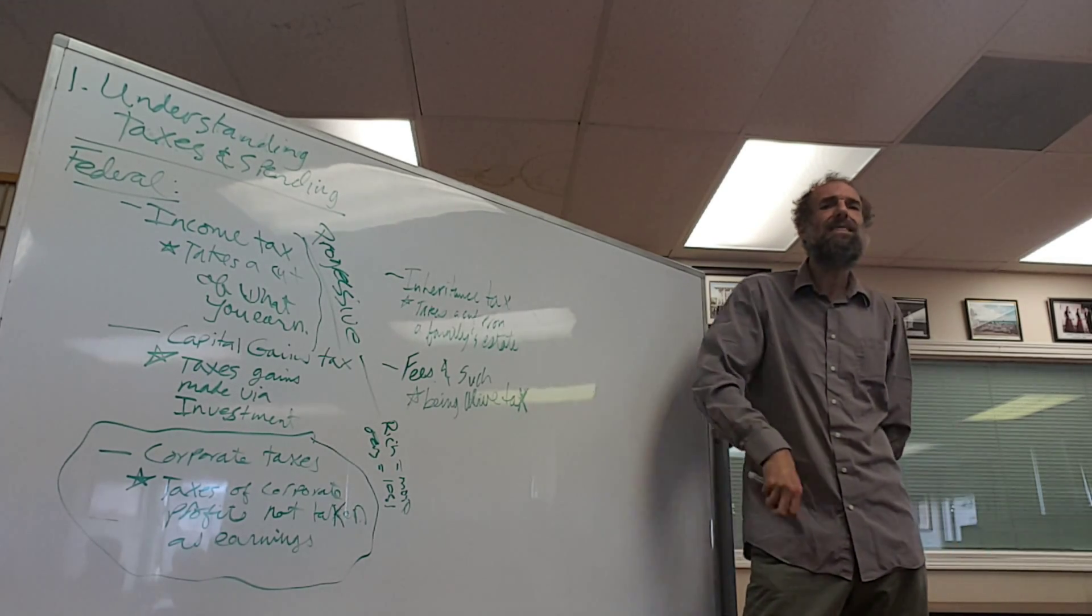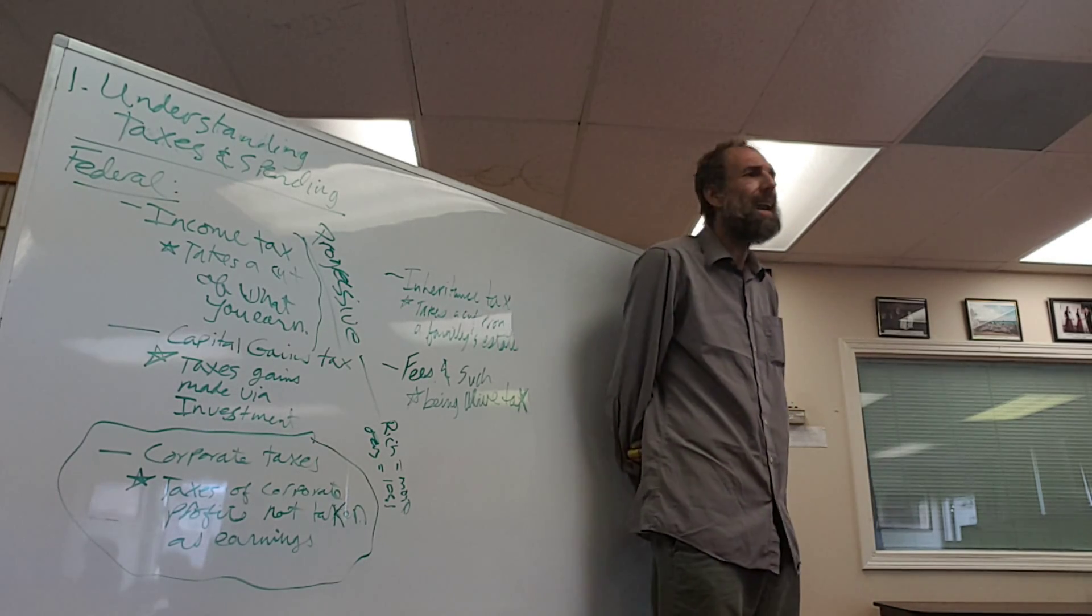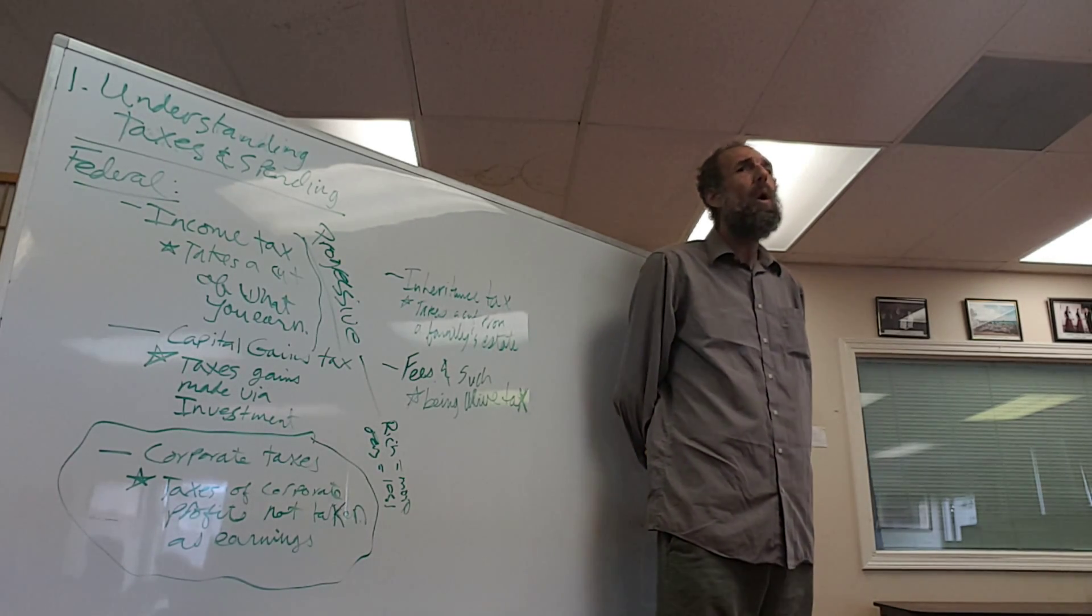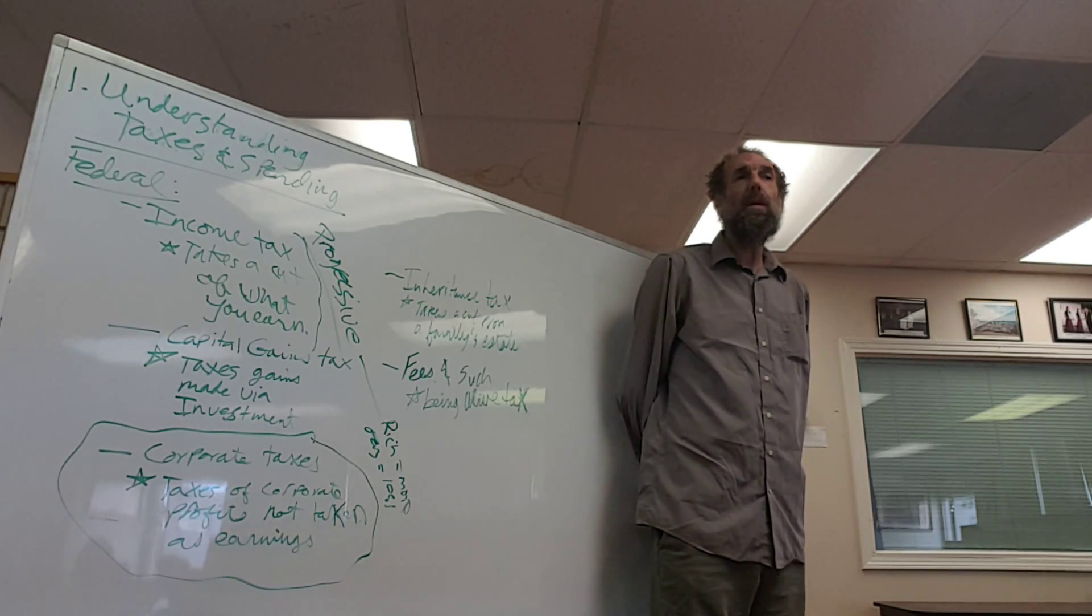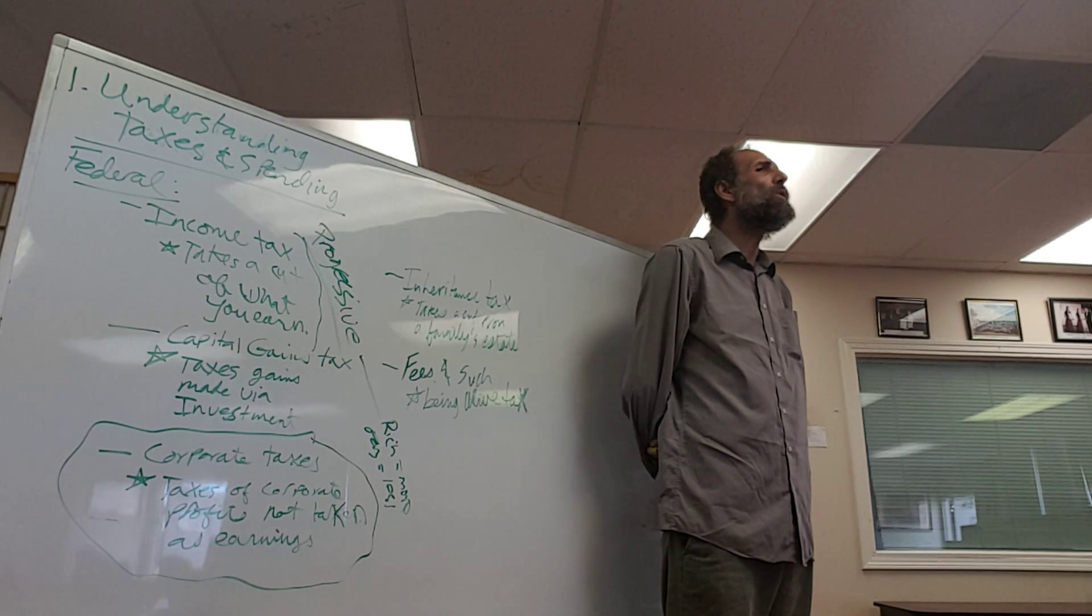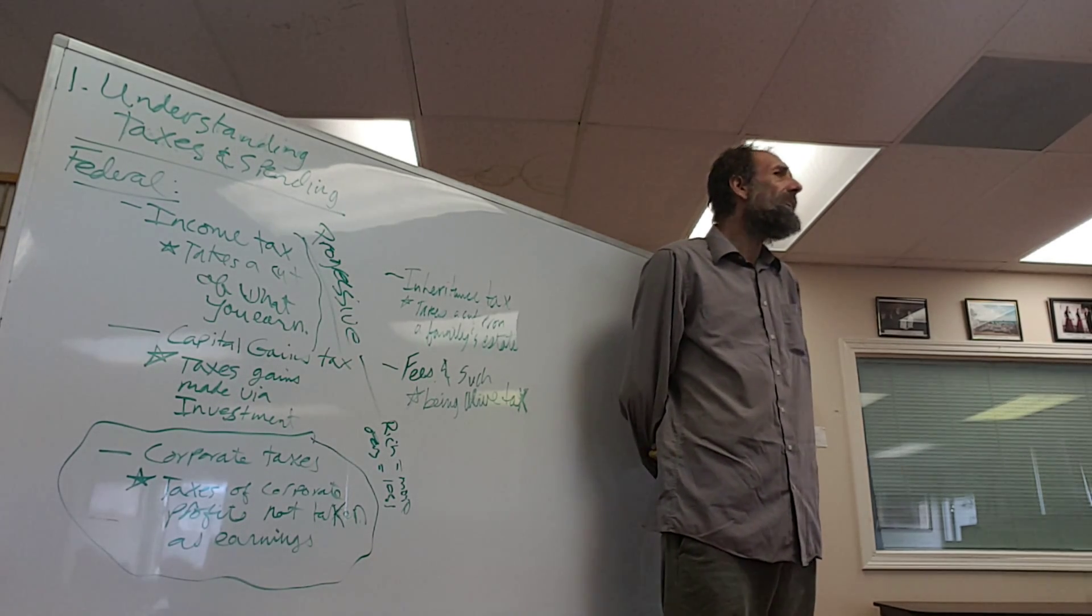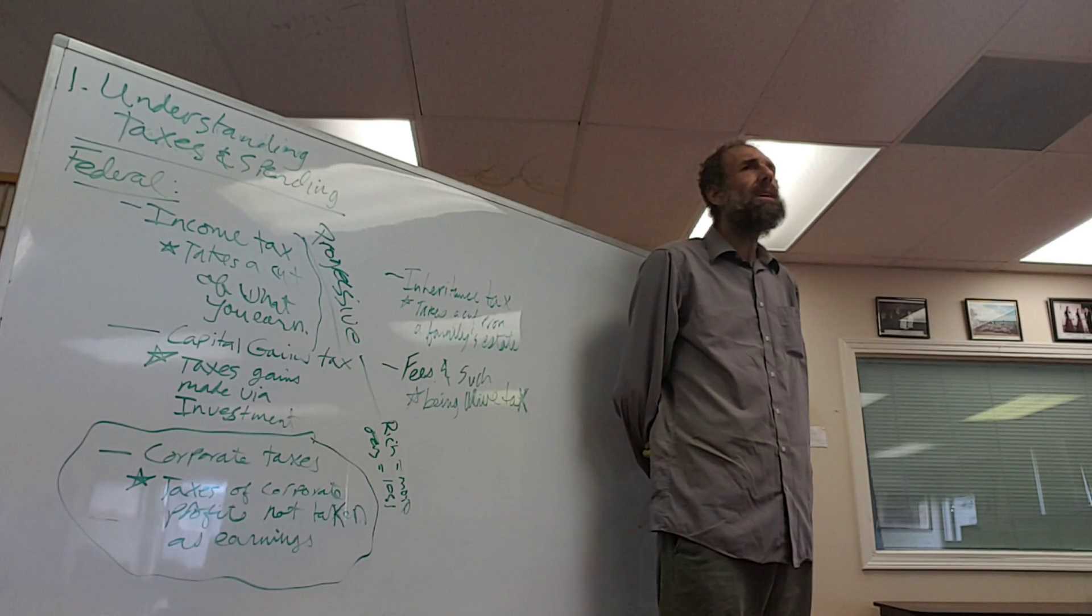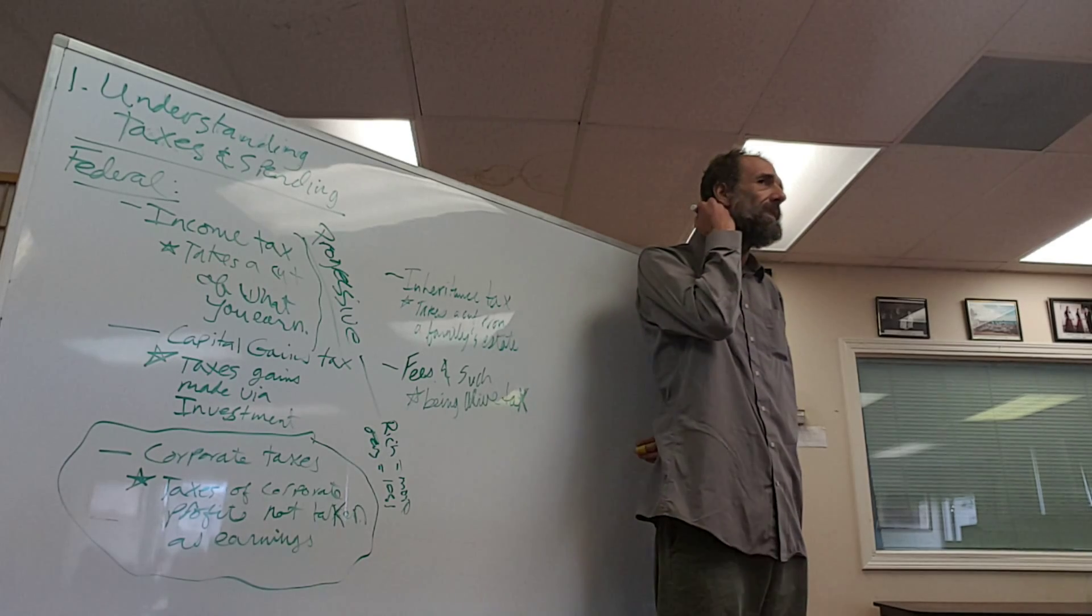The last one are the fees and such. We should remember, guys, that the federal government has a lot of ways to extract money from people. One of the ways the federal government extracts money is from use taxes for people who use federal resources. Now these aren't regular citizens. It's going to be something like a rancher. I mean, they're regular citizens, but they're not usual citizens. They're not typical citizens.